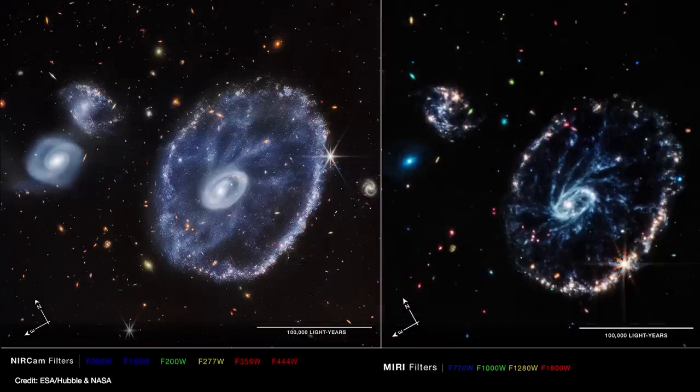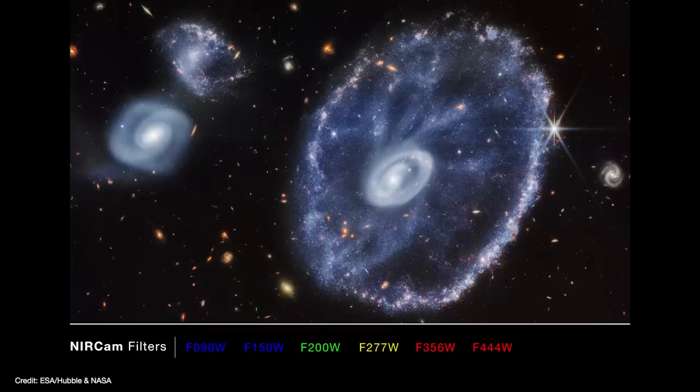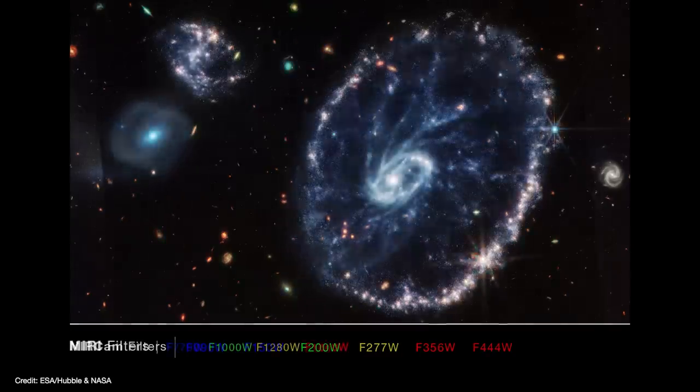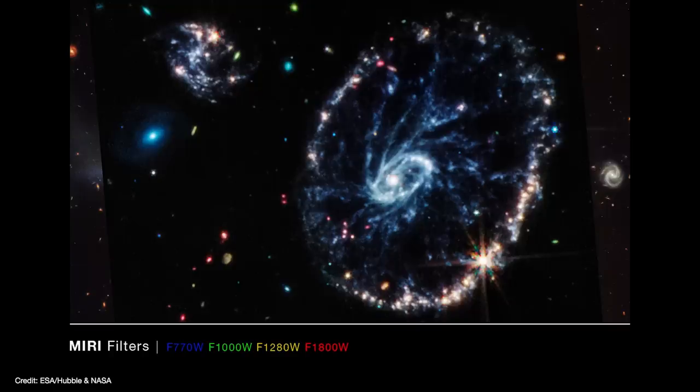NearCam shows us where the stars, the star-forming regions, and star clusters are located, while MIRI shows the cooler dust lanes and how they make up the overall structure of the galaxy. And notice that in the MIRI image, the colors were once again remapped to bring blue into the shorter end of the mid-infrared spectrum.